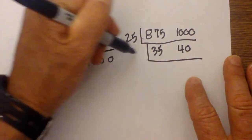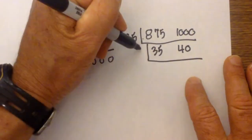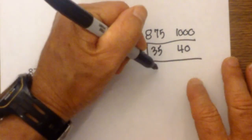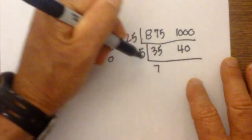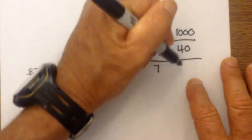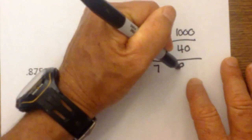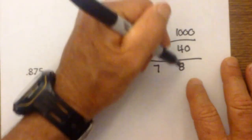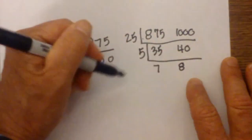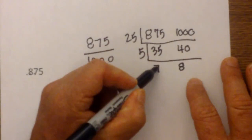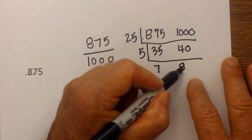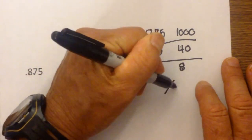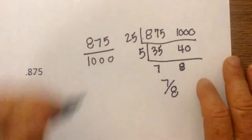I now know that 5 will go into both of these. 5 goes into 35 seven times. 5 goes into 40 eight times. This is prime and the prime will not divide into the other number. So it is 7/8.